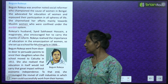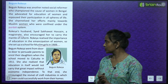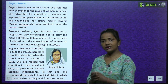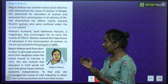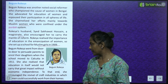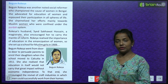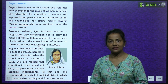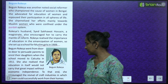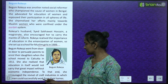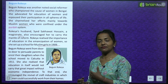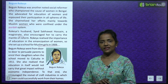Begum Rokeya went from door to door to persuade parents to enroll their daughters when the school moved to Calcutta in 1911. She also realized that education in itself would not carry great impact without economic independence. To that end, she encouraged the revival of craft industries in which women could successfully work from their homes.